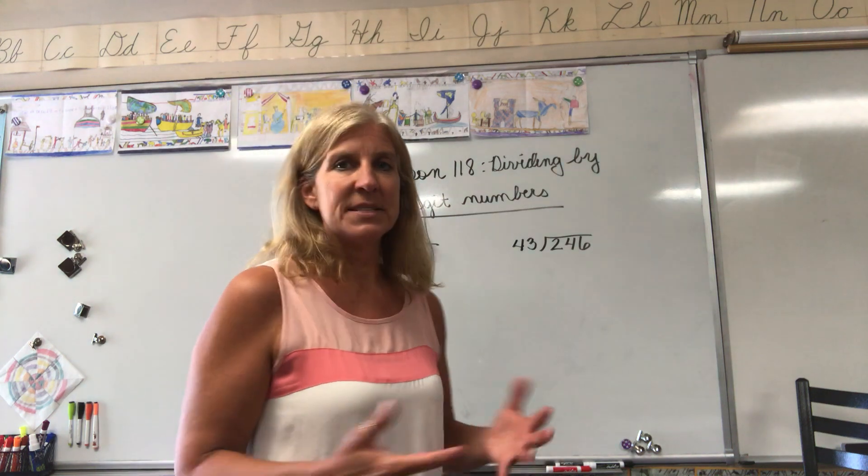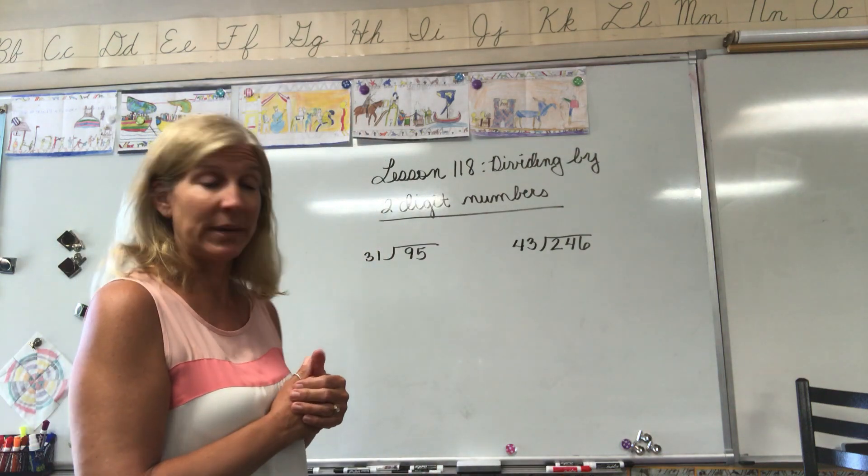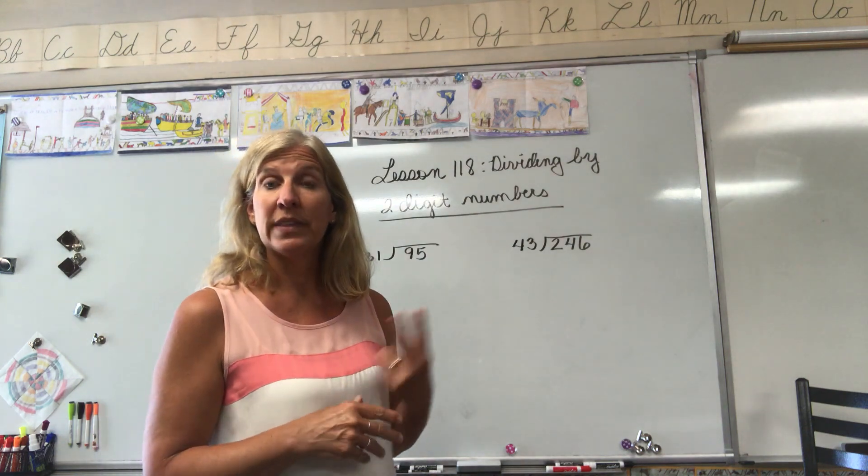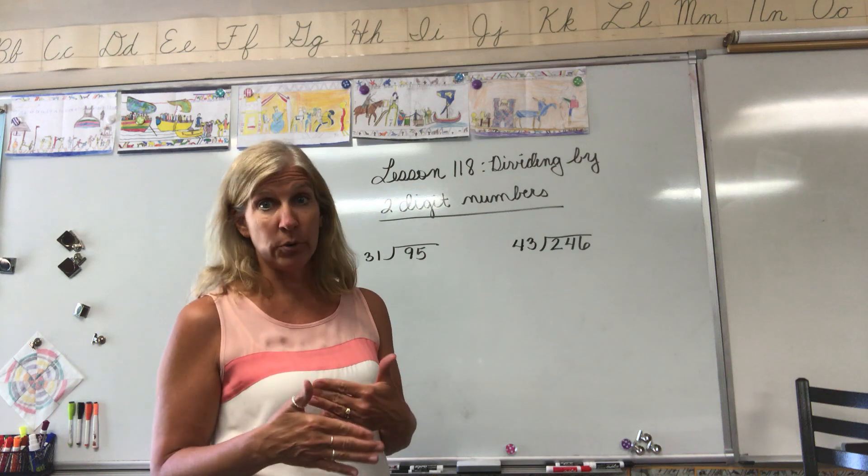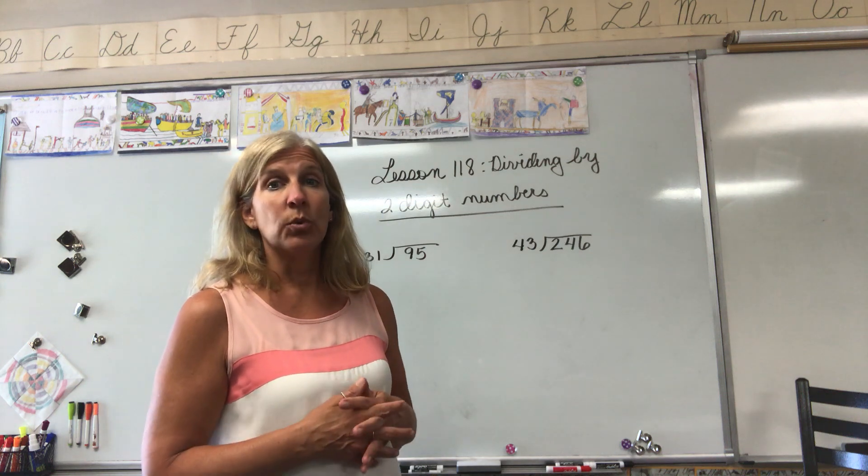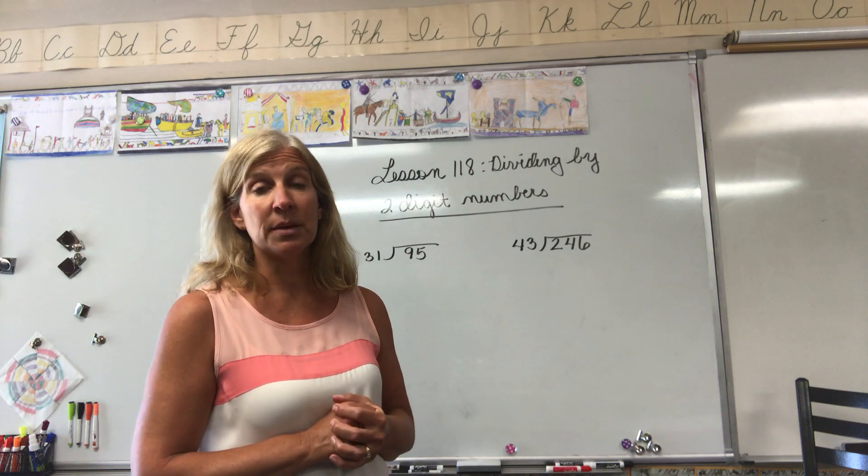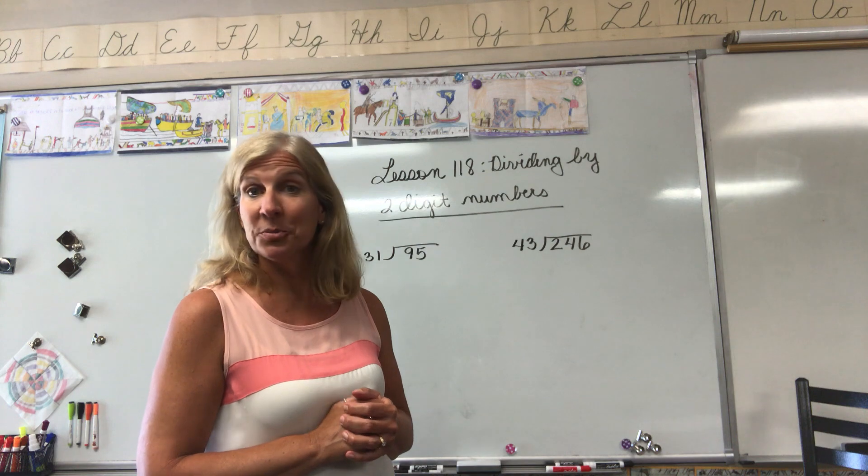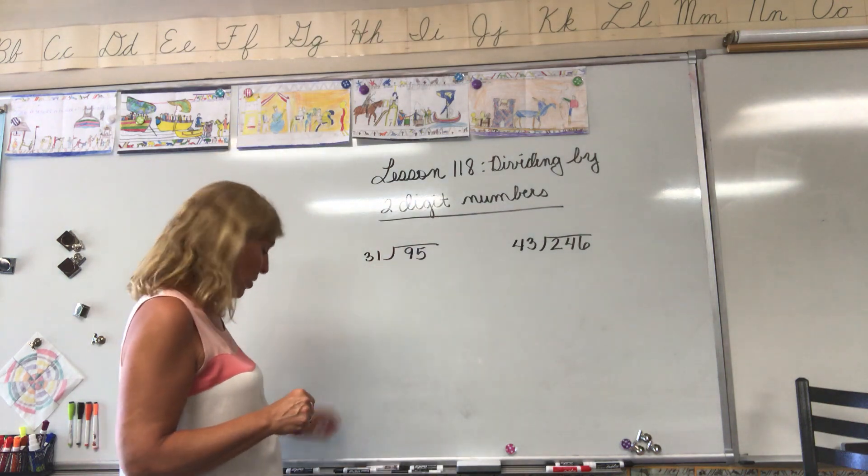All right guys, so today we are going to extend a lesson that we learned last week. Last week we talked about dividing by two-digit numbers when they were multiples of 10, so we divided by 20 or 30 or 40. Today we're going to extend that a bit and we're going to divide by two-digit numbers that do not end in zero.